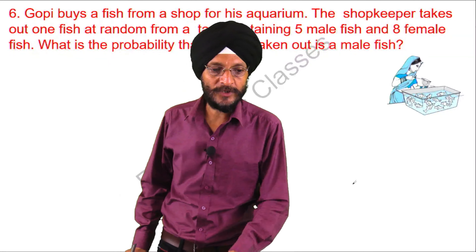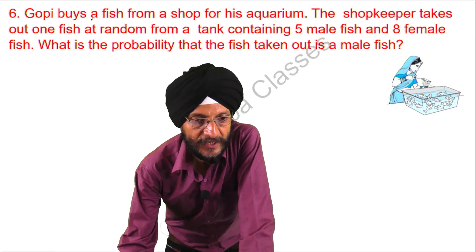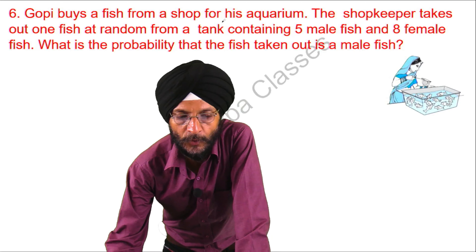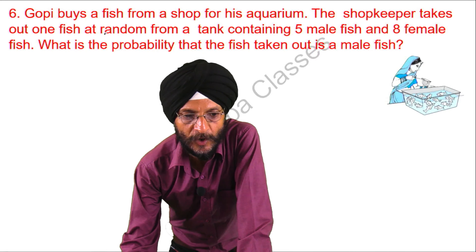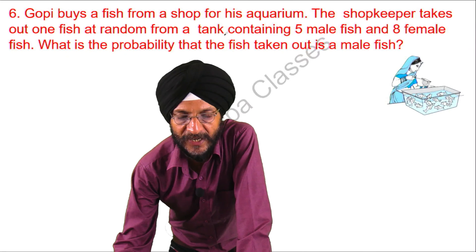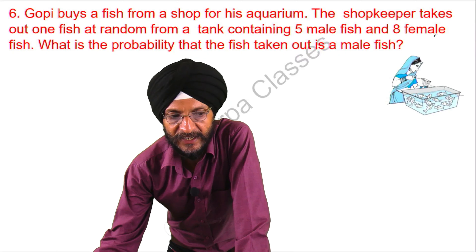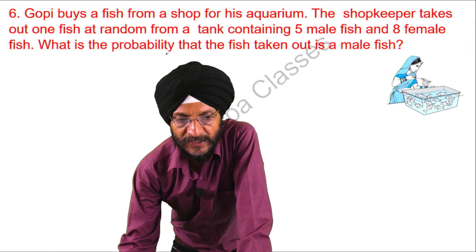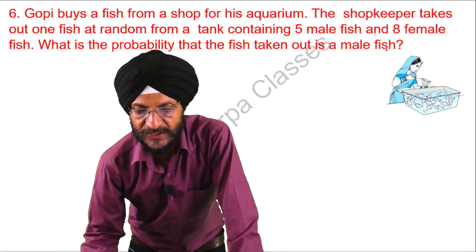The question before us is: Gopi buys a fish from a shop for his aquarium. The shopkeeper takes out one fish at random from a tank containing 5 male fish and 8 female fish. What is the probability that the fish taken out is a male fish?